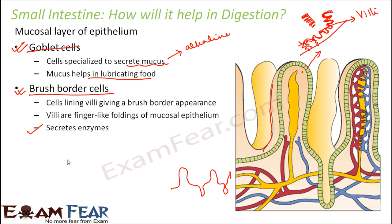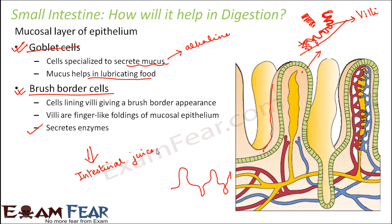These cells also secrete enzymes. Whether it is goblet cells or brush border cells, they are all part of the small intestine. The enzymes which are secreted by them all together form the intestinal juice — just like the stomach secretes gastric juice, the liver secretes bile juice, and the pancreas secretes pancreatic juice. Similarly, the intestine secretes intestinal juice, and it is basically these cells which secrete it.